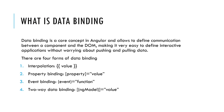So what is data binding? Data binding is the core concept in Angular and allows us to define the communication between components and the DOM. There are four forms of data binding: interpolation, property binding, event binding, and two-way data binding.